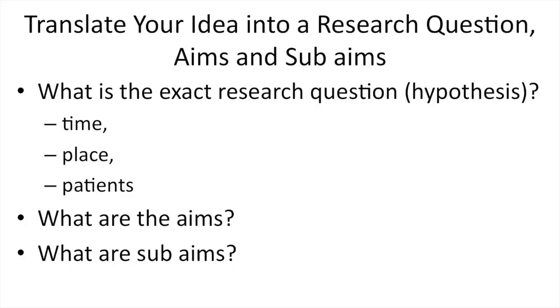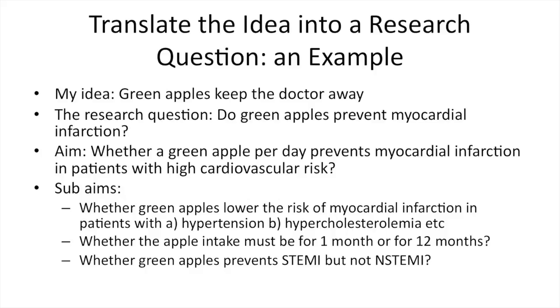For example, your idea: green apples keep the doctor away. Your research question could be: do green apples prevent myocardial infarction? Your aim is whether one green apple per day prevents myocardial infarction in patients with high cardiovascular risk — you exactly define the patients and the intervention. Sub-aims could be whether green apples lower the risk in patients with hypertension or hypercholesterolemia, whether apple intake must be for one month or 12 months, or whether green apples prevent ST-elevation myocardial infarction but not non-ST-elevation myocardial infarction.